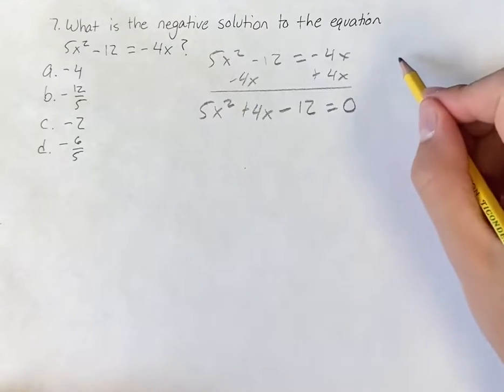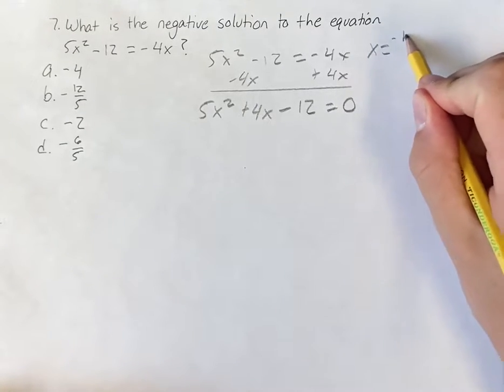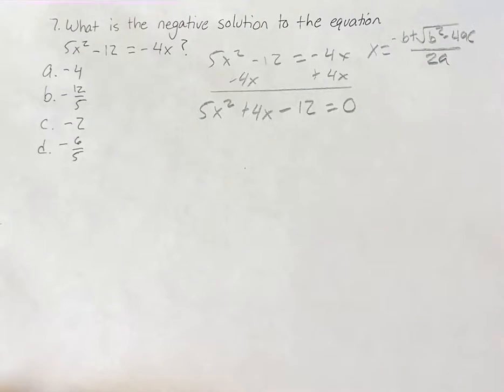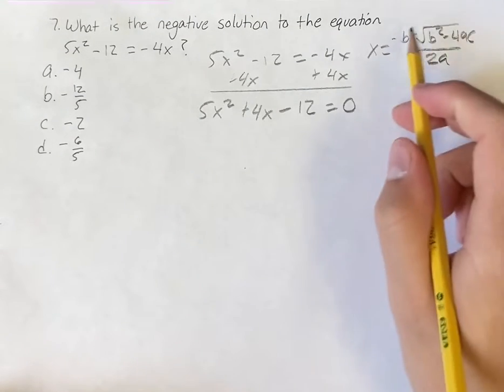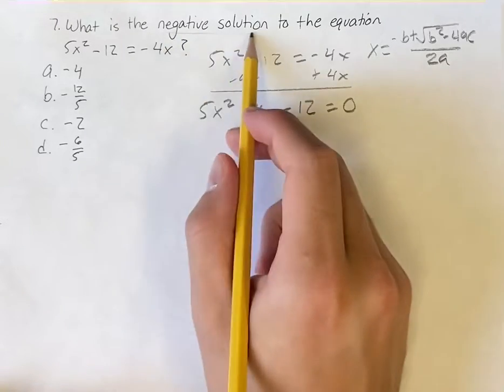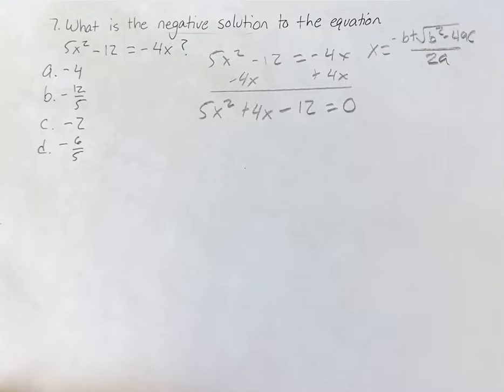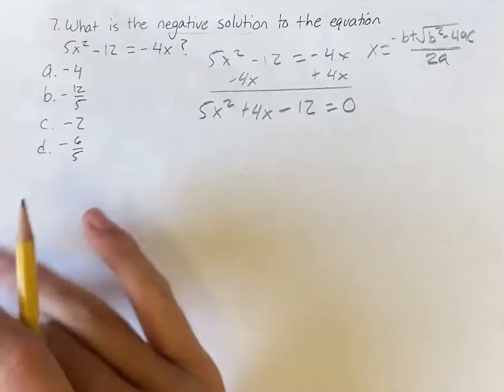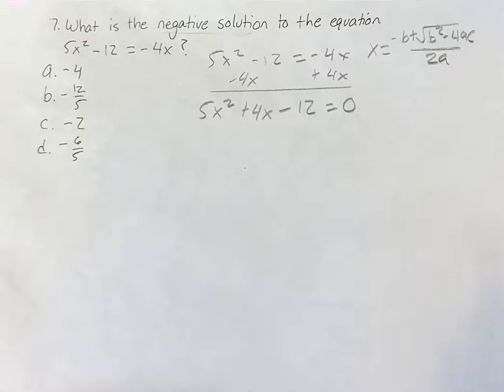What you can do here is you can just plug this in to the quadratic formula. You can do this, calculate it out, it'll give you both solutions. One of them is going to be negative, and it'll be one of those options. What we're going to do is we're going to say, okay, we could do that, but if we're crunched for time, there might be a faster way to do it.